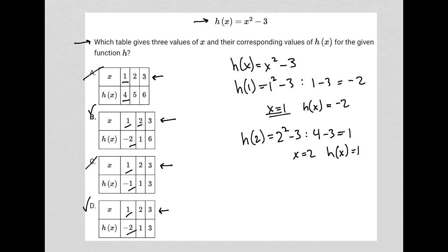So for choice B, I have 2 and 1. For choice D, I also have 2 and 1, so that didn't help me at all. So now I go to h of 3.